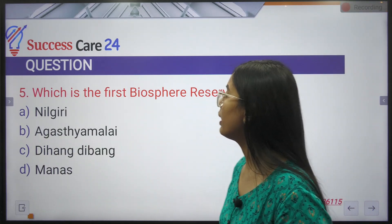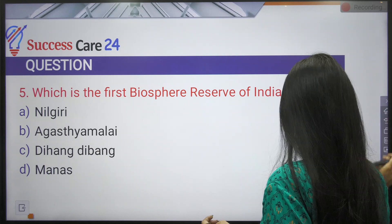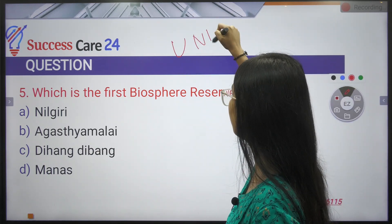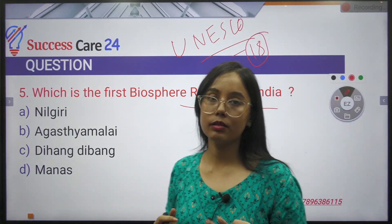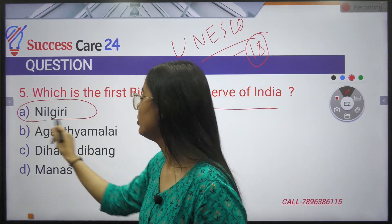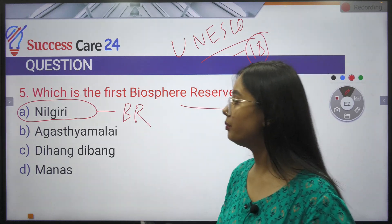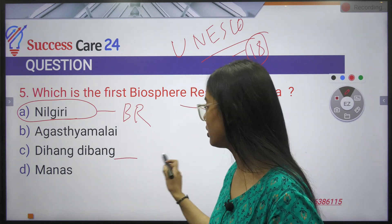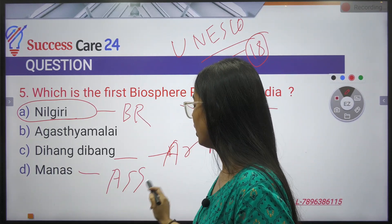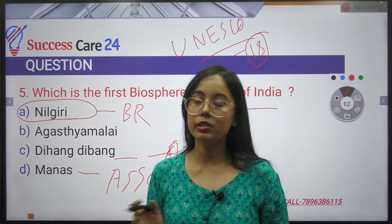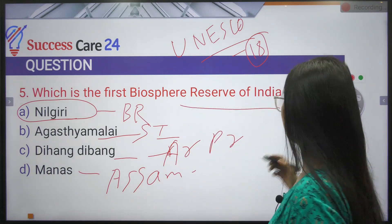Which is the first biosphere reserve of India? India has a total of 18 biosphere reserves, declared by UNESCO. India's first biosphere reserve is the Nilgiri Biosphere Reserve, located on the Kerala–Tamil Nadu border. Other notable biosphere reserves include Dihang-Dibang in Arunachal Pradesh, Manas in Assam, and Agasthyamalai in South India.